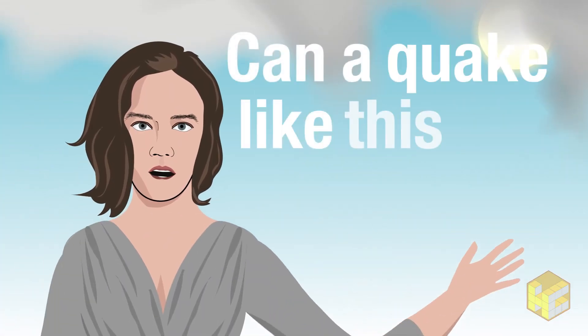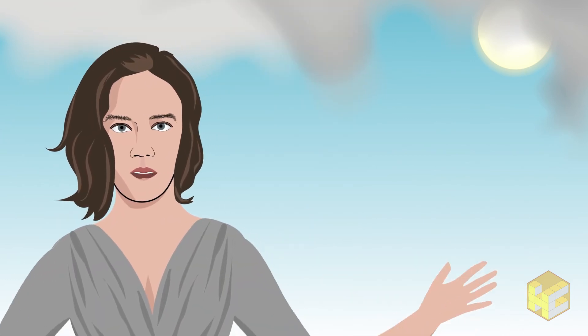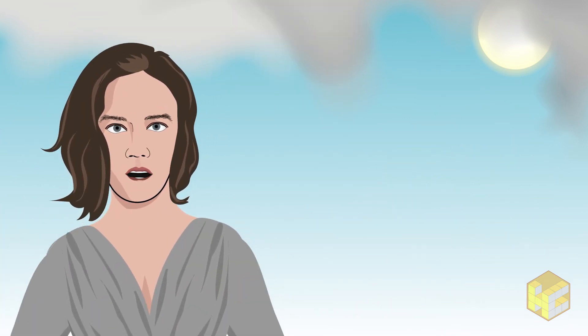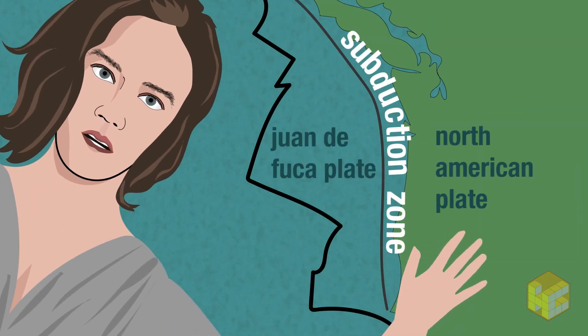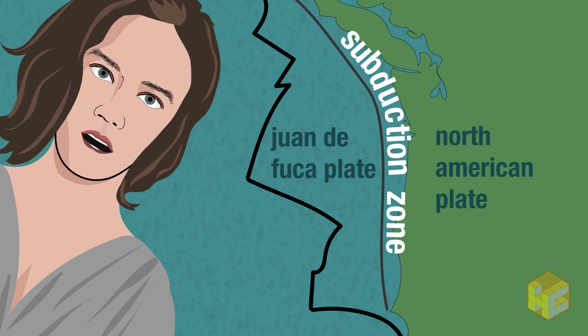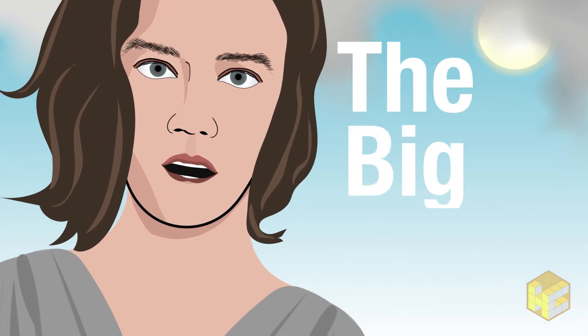Can a quake like this occur again in the future? Absolutely. Scientists predict that an even bigger quake could shake the northwestern United States. This subduction zone along the edge of the Juan de Fuca plate is overdue for some action, an anticipated earthquake nicknamed the Big One.